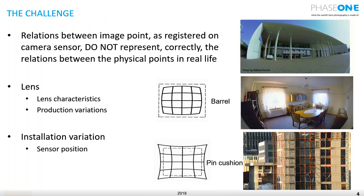So what is the challenge? The relation between an image point registered on the camera sensor does not correctly represent the relations between physical points in real life. If you look at the image on the right, you'll see convex columns. I assume you know that the columns are straight — they are not convex. If you look at the middle image, you'll see a convex cupboard.